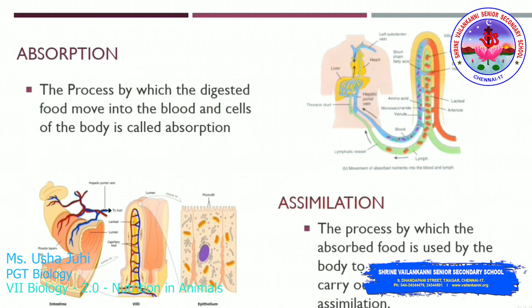Absorption is the process by which the digested food moves into the blood and cells of the body. Assimilation is the process by which the absorbed food is used by the body to generate energy and carry out its life functions.